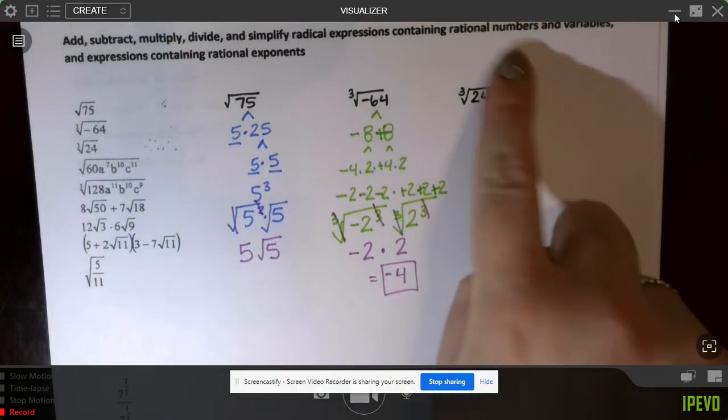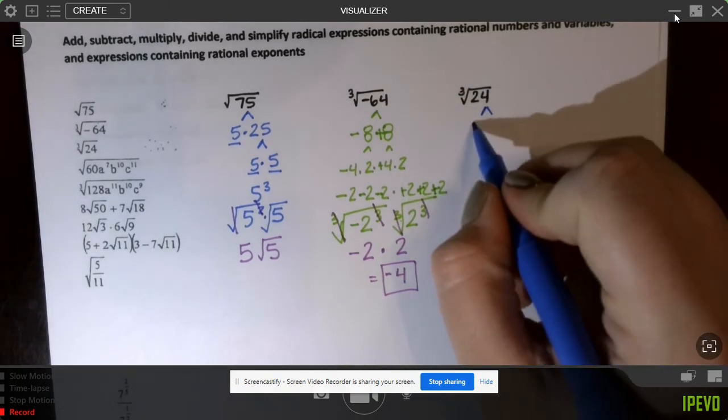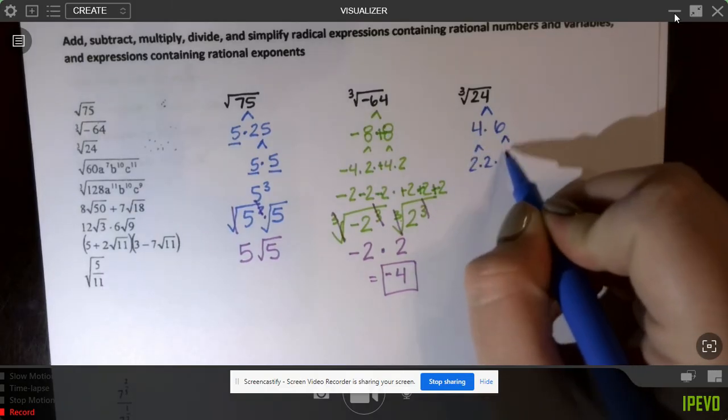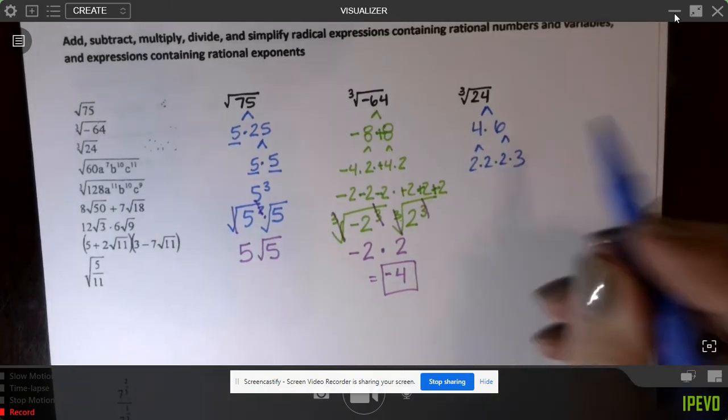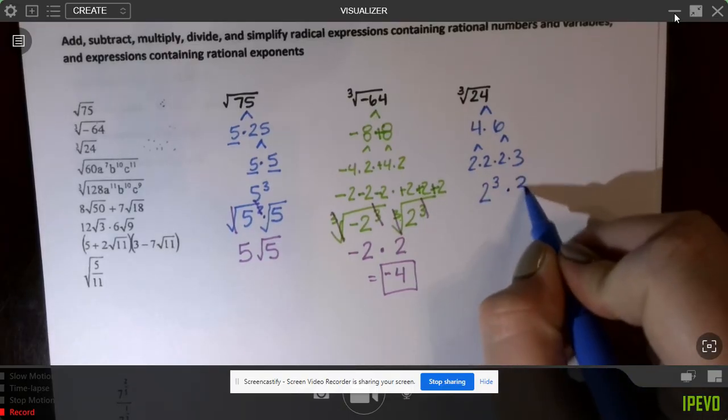Last but not least, let's look at this one. We're going to break it down, so we've got 4 times 6, or 2 times 2 times 2 times 3, or we could rewrite that as 2 to the third power times a 3,